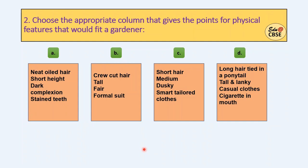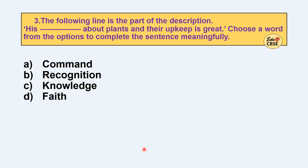Third one: the following line is part of the description — 'His dash about plants and their upkeep is great.' Choose a word from the options to complete the sentence meaningfully.